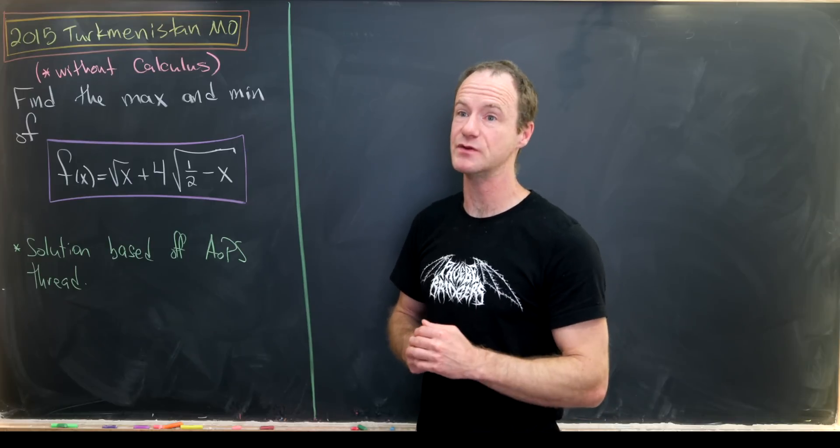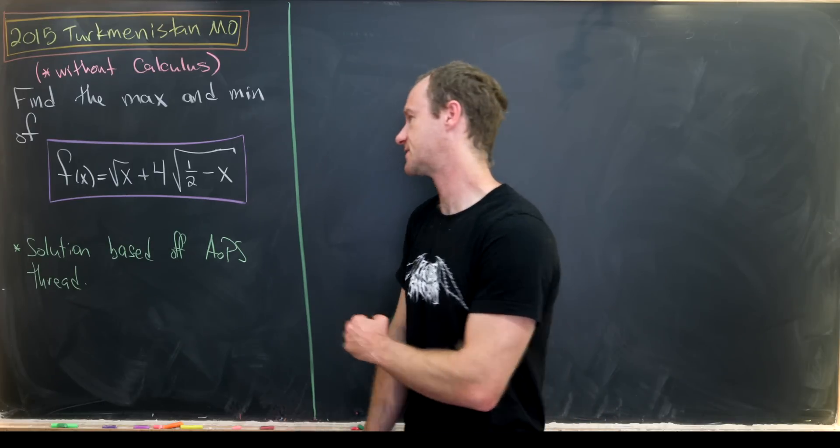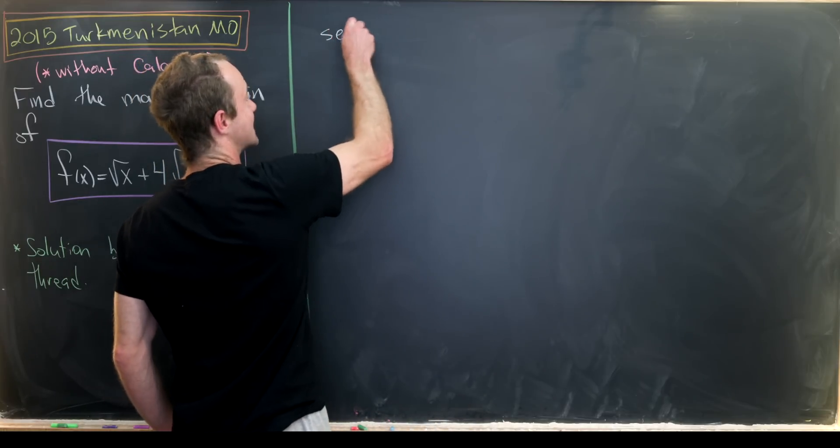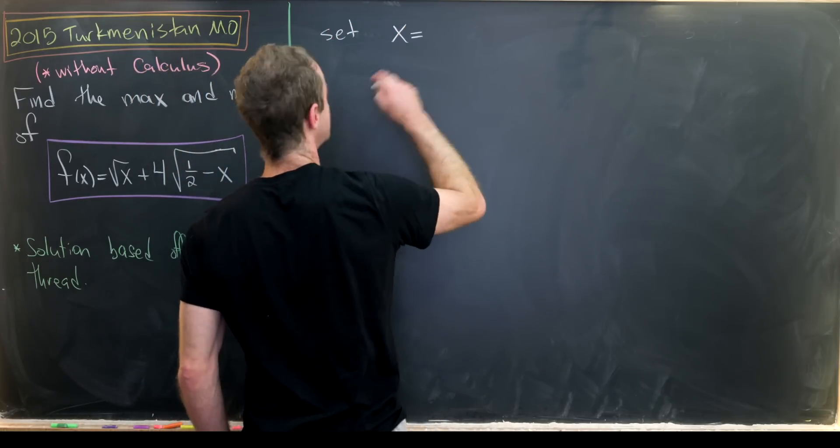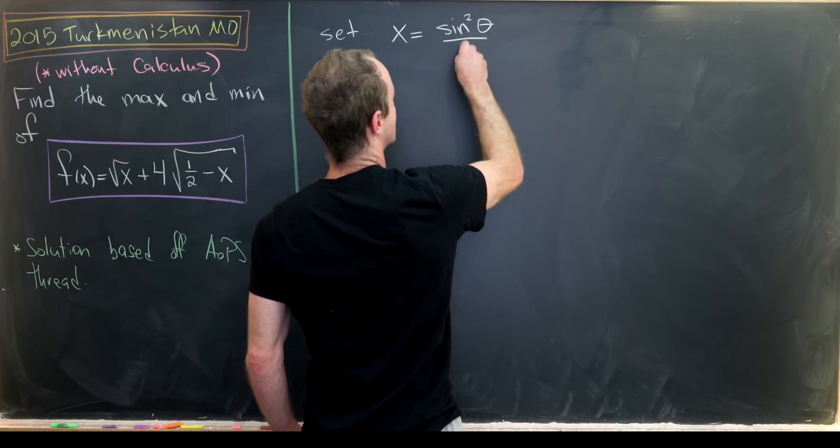That being said, we won't be using calculus. We'll just be using some trigonometric identities. So let's go ahead and set x equal to the sine squared of theta over 2.